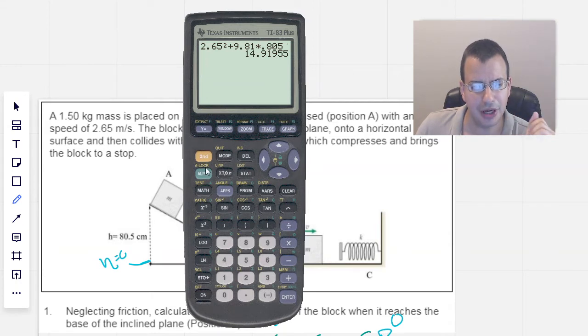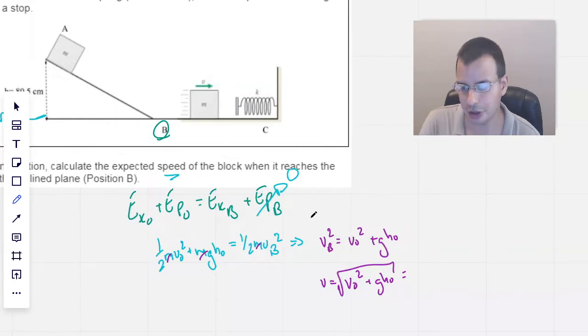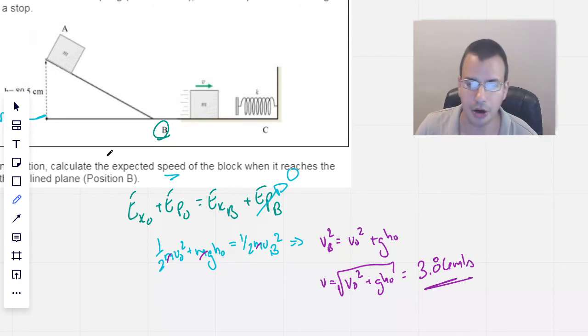And then we have 14.91, we'll square root that answer, and we get 3.86. So we have 3.86 meters per second. So that's the answer to part one.